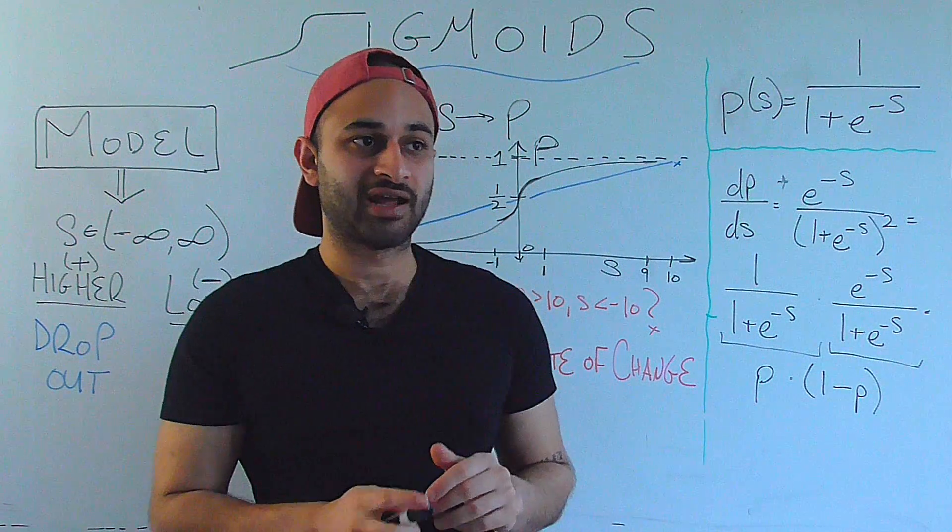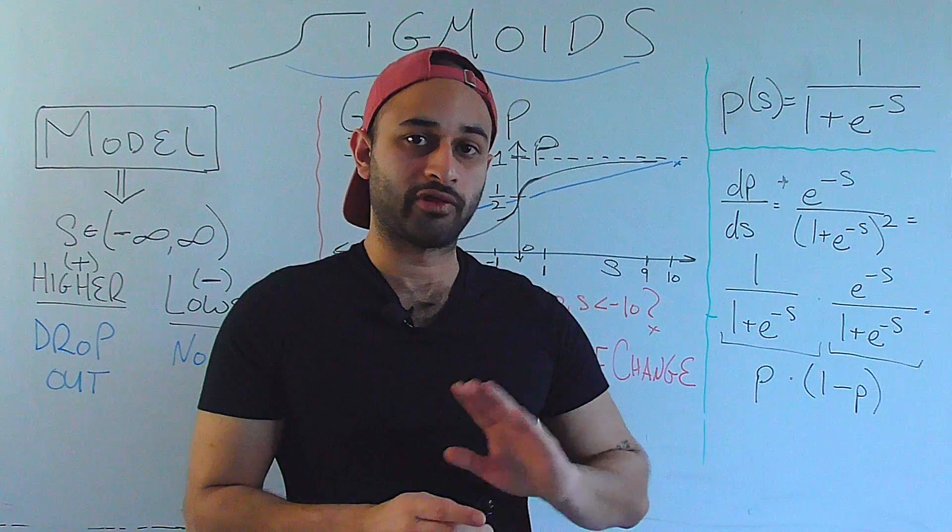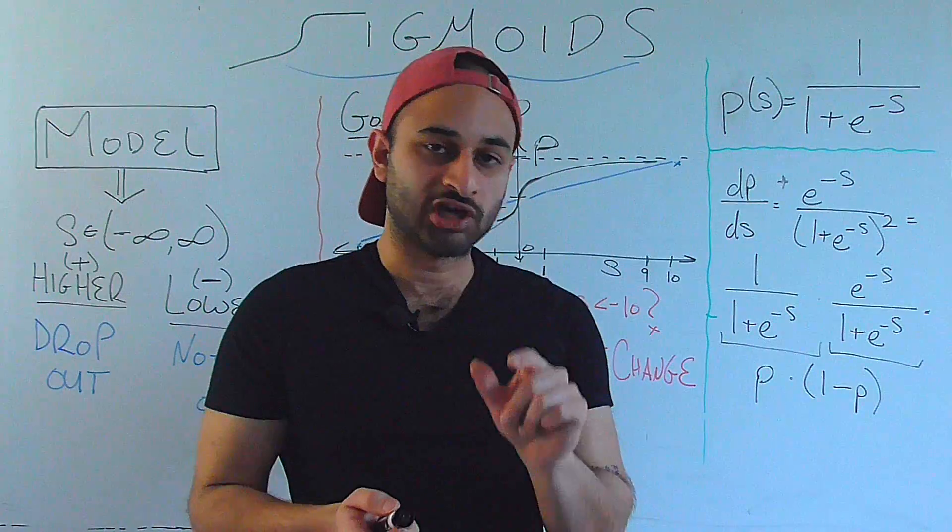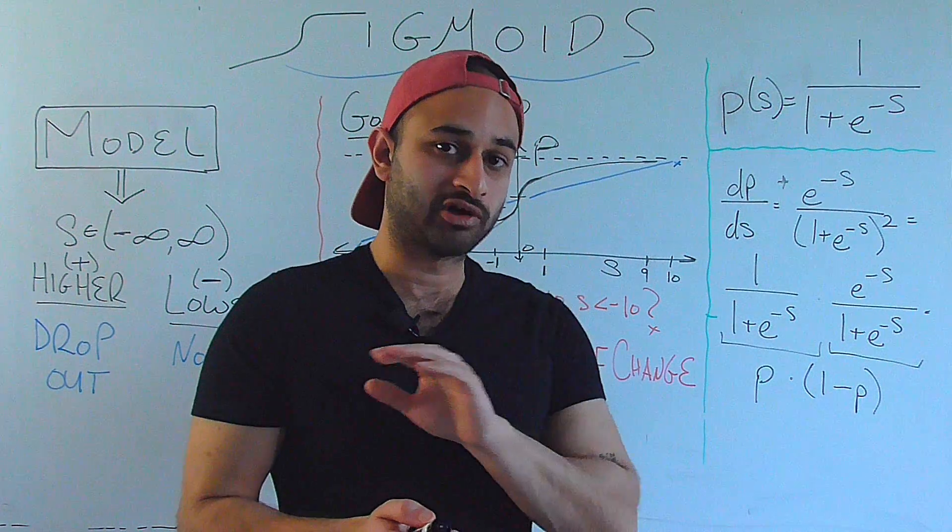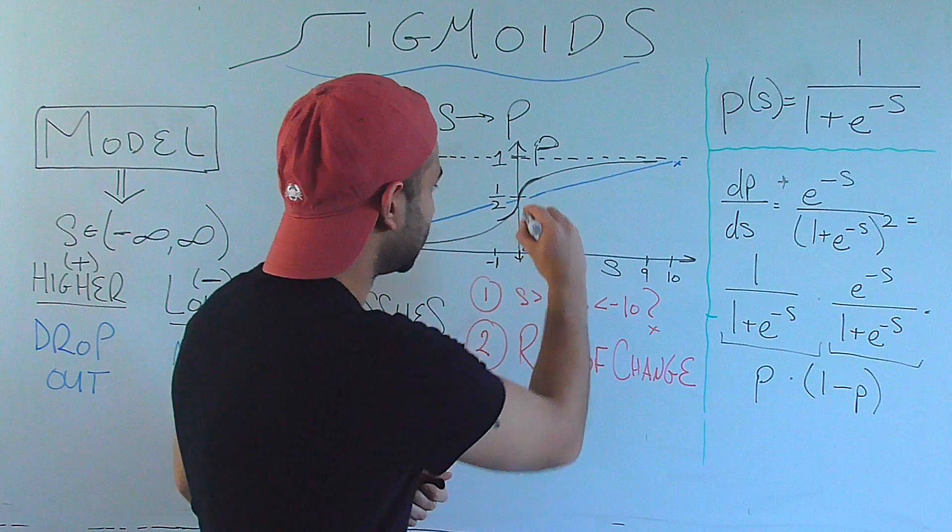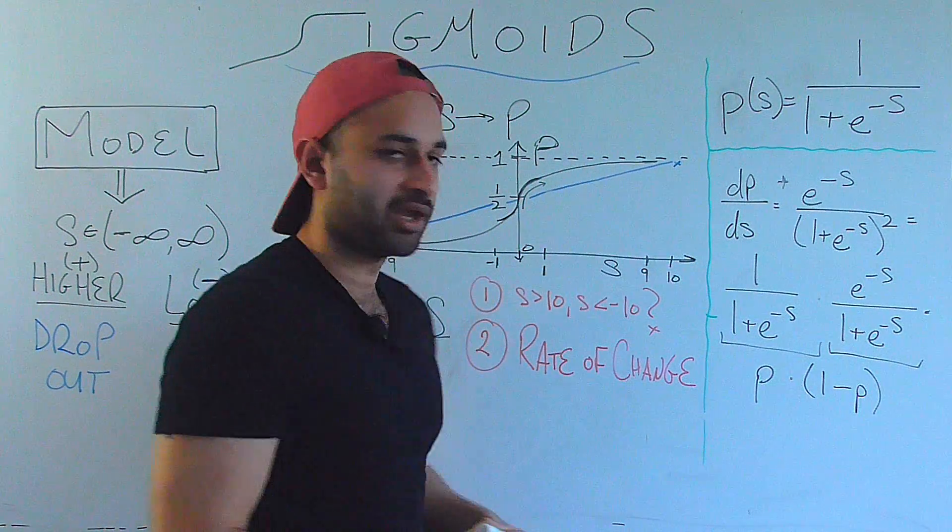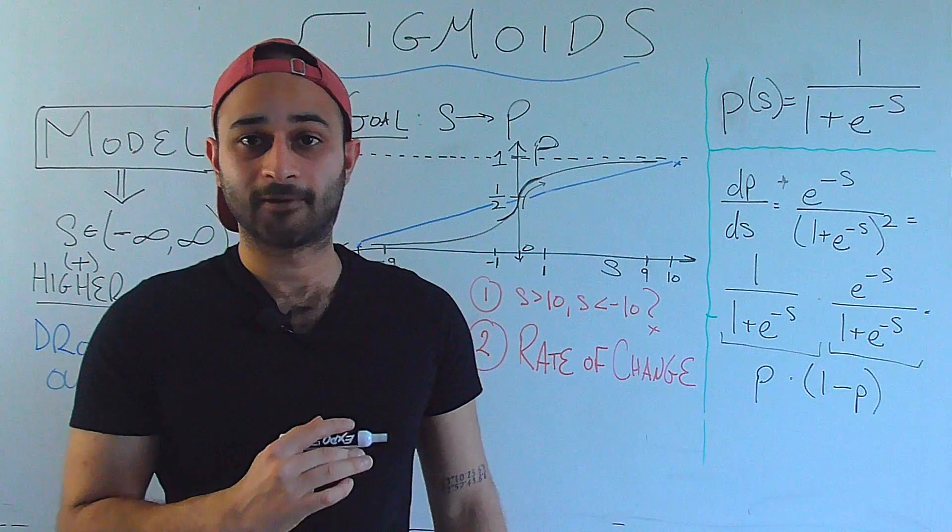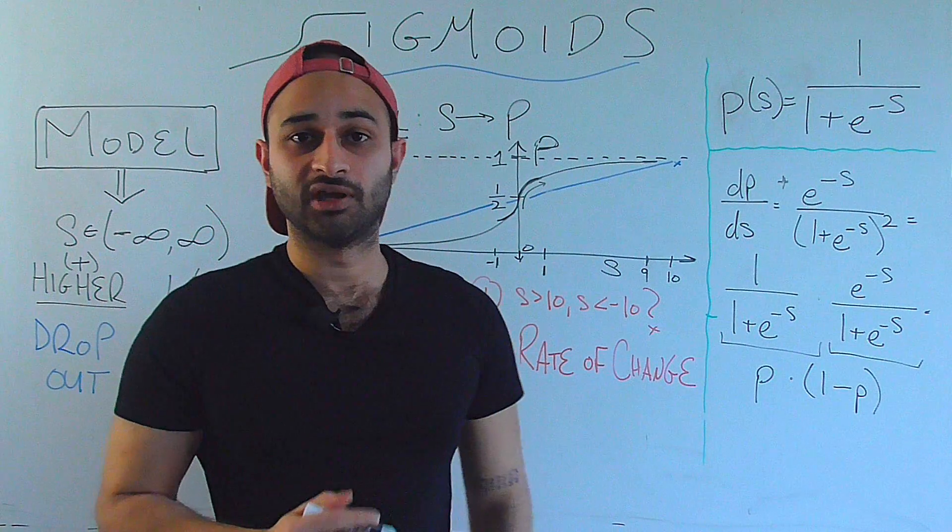And that makes sense, because that's exactly when the probability would be changing the most. Another way to say that is, let's say that I have zero information whether or not the student's going to drop out. Then you change my score by a little bit. Let's say you increase my score by a little bit. That gives me a ton of information, which is basically the same story as the sigmoid jumping very fast in the beginning. Therefore my derivative is going to be very, very high.